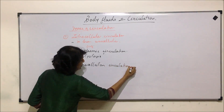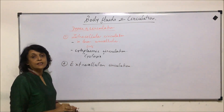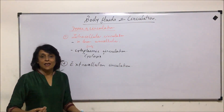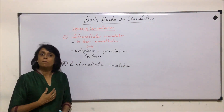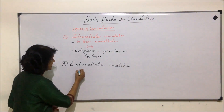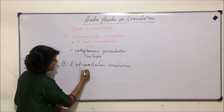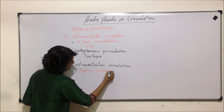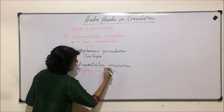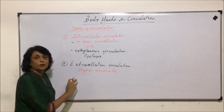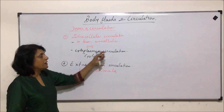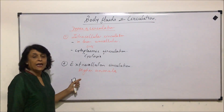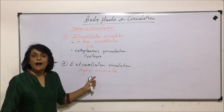The purpose of cyclosis is the same: distribution of respiratory gases and absorbed material. The second type of circulation is extracellular circulation, which means there is something circulating outside the cell, or we can say between the cells. This is seen in higher animals.